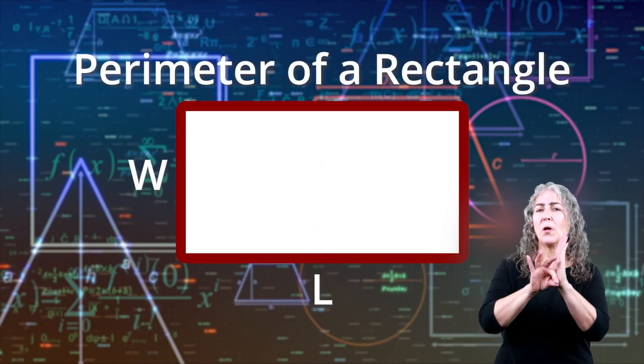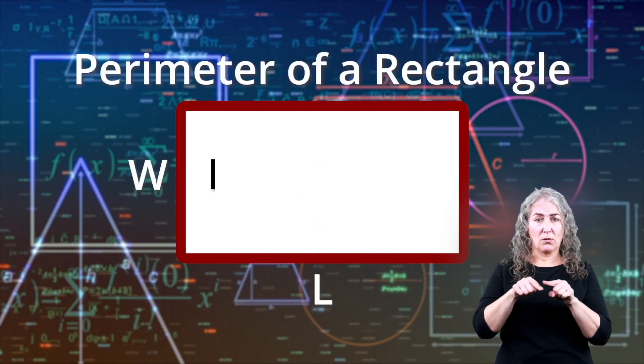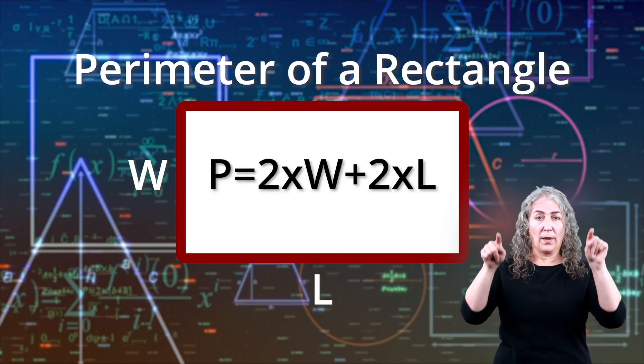The straightforward formula for finding the perimeter of a rectangle is to take 2 times the width and add it to 2 times the length.